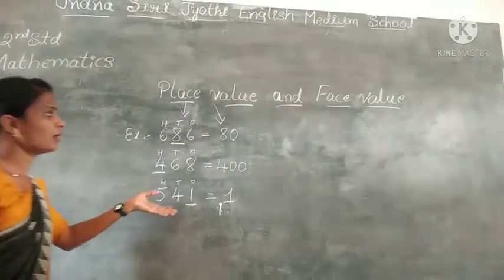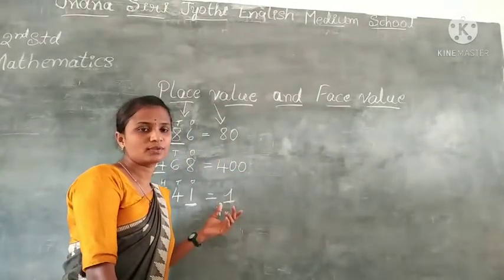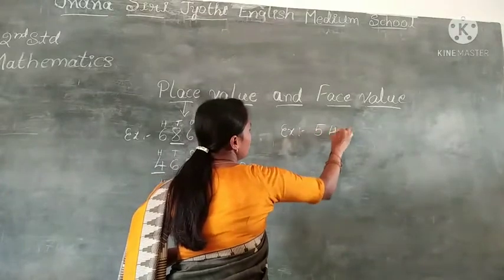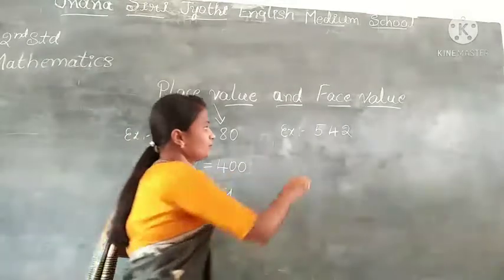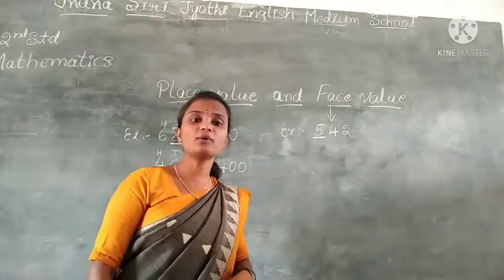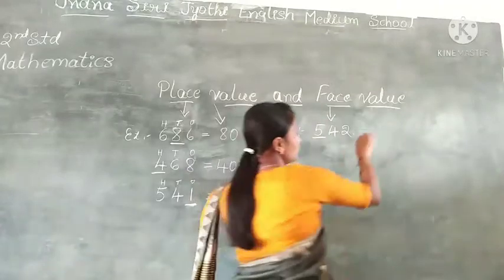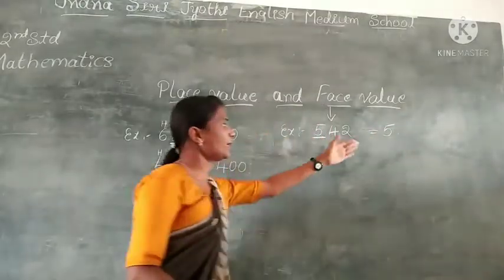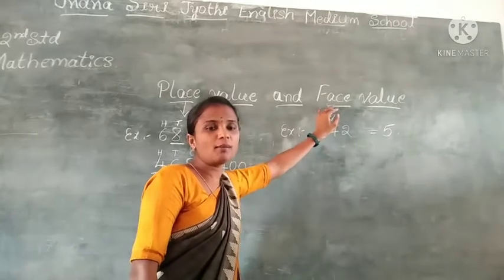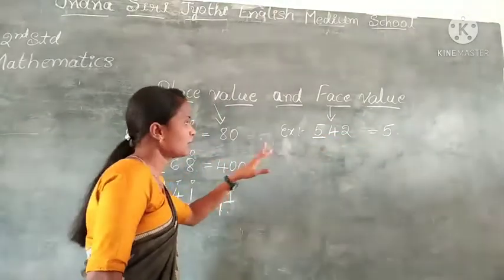This is about place value. Now, coming to the next topic — face value. Face value means you have to write the actual value of the digit. For example, in 542, what is the face value of 5? The actual value means 5 only. So you simply write 5. Don't write 500 — that is the place value. For face value, write the actual value, so write 5 only.